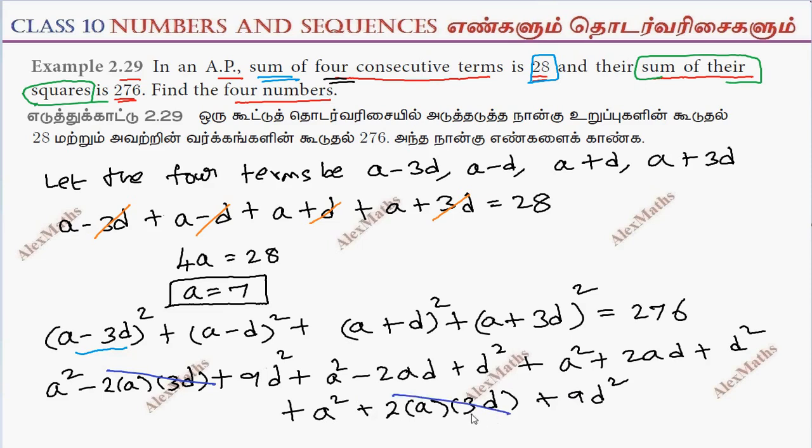The minus 6ad and plus 6ad cancel. The minus 2ad plus 2ad cancel. So the total equals 276.